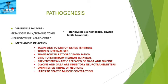The pathogenesis of tetanus is mediated by two virulence factors. The first is tetanolysin, which is a heat-labile, oxygen-labile hemolysin. The second is tetanospasmin, also called the tetanus toxin. It is a neurotoxin and is plasmid-coded.